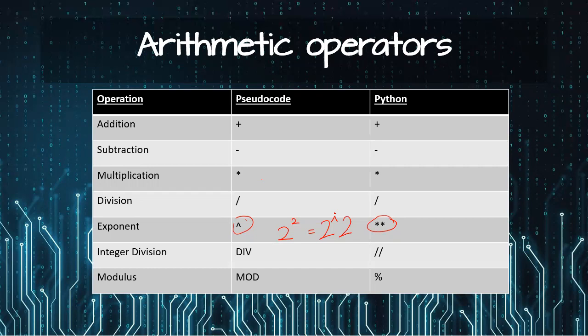Mod is just the remainder. In a division, whatever is the remainder, that is the modulus. And whatever is the answer of the division without the decimals or without the remainder, that is the div or double slash.